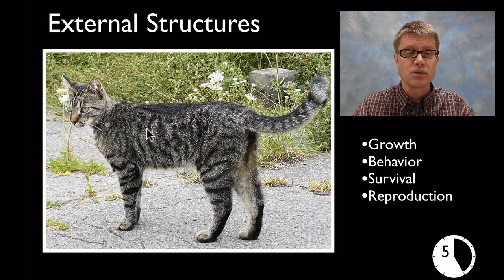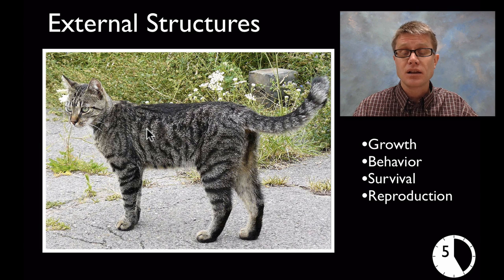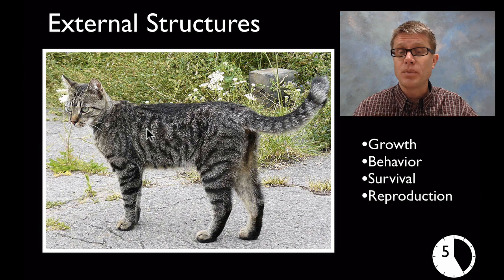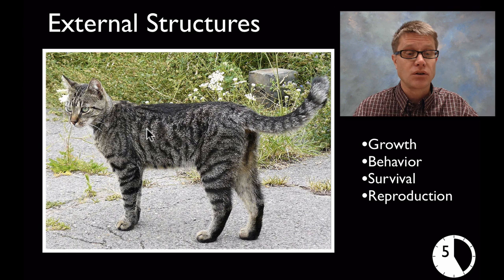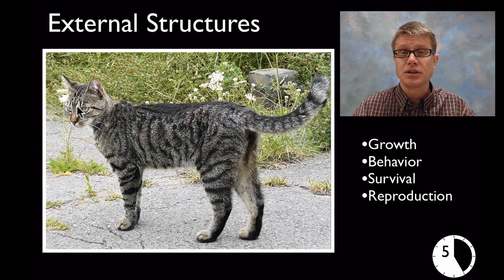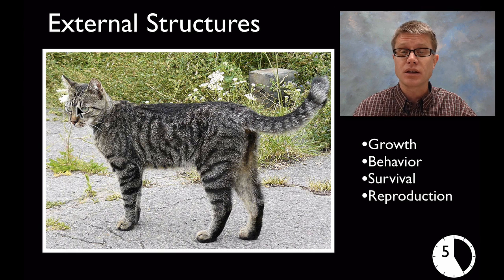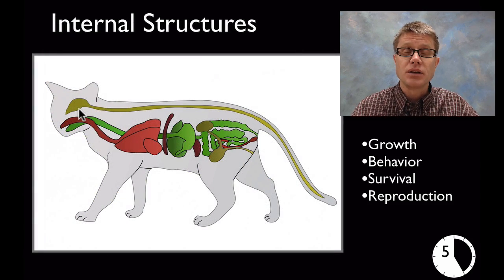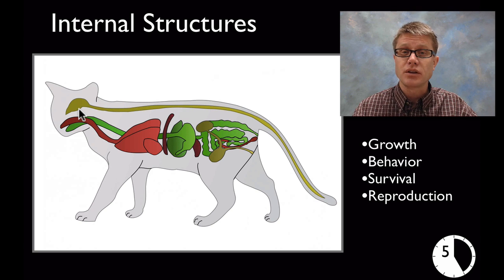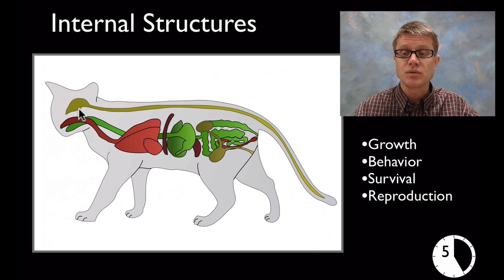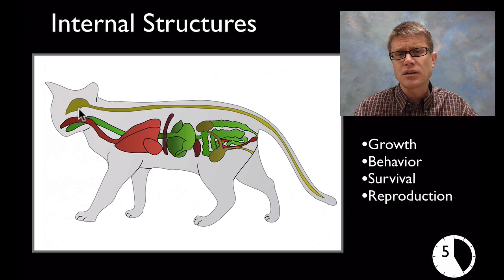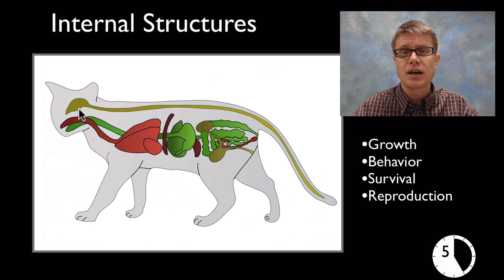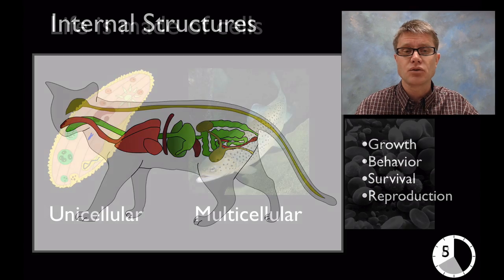And so we could point at a number of different structures in this cat that allow it to grow, behave, survive. So for example, its eyes allow it to gain information on its environment and can respond to that using its muscles and its bones. And so now I'm talking about internal structures. And so in elementary we should be talking about structures on the inside and the outside of organisms that allow them to do these big four things. But we should keep it at the macro level. We shouldn't be talking about cells yet. That's going to come when we get to the level of middle school.